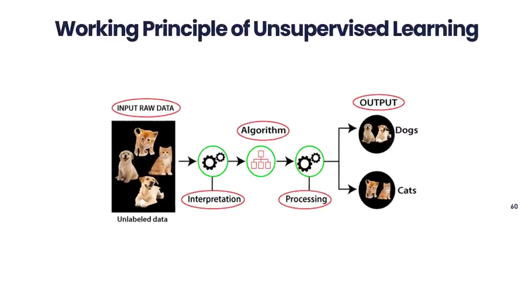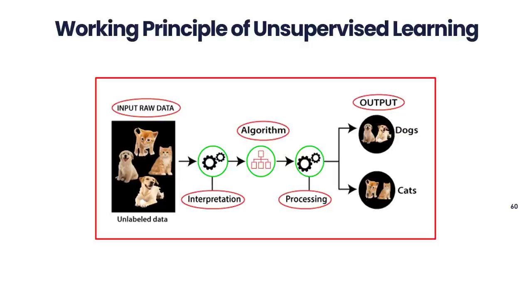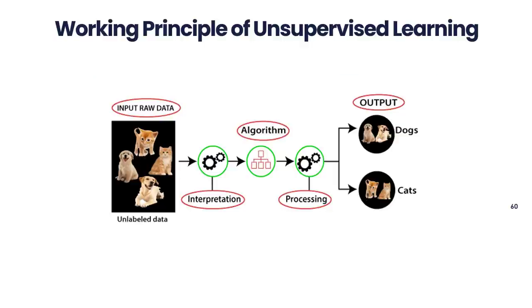Working principle of unsupervised learning: we start with data that wasn't labeled, which means it wasn't put into groups and there were no outputs to go with it. The machine learning model is trained by giving it this unlabeled input data. First, it will analyze the raw data to find patterns that are hidden in the data. Then, it will use the right algorithms, such as k-means clustering, decision tree, etc., to find the patterns. Once the right algorithm has been used, the algorithm divides the data objects into groups based on how similar or different they are.